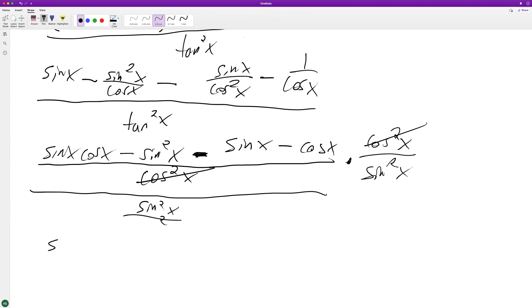And it looks like we're going to be left with sine of x cosine of x minus sine squared of x minus sine of x minus cosine of x all over sine squared of x. There are other things you could do, but that's simplified enough.